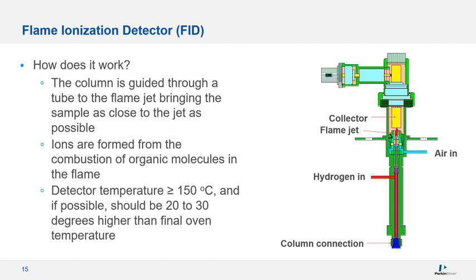How does this detector work? The column effluent is mixed with hydrogen, air, and makeup gas if required, and ions are formed by combustion of organic molecules in the flame, becoming ionized. The energy is proportional to the energy in the hydrogen-carbon bonds. As the column effluent is burned in the flame, ions are created which form a small current when a potential difference is applied. When no analyte is being burned, a small background current of 10 to 20 pA arises from impurities in the carrier and detector gases. The response is therefore the ionization potential in the carbon-hydrogen bonds. It is also recommended to set the detector temperature 20 to 30 degrees hotter than the final oven temperature, to keep the detector cleaner longer and prevent condensation.